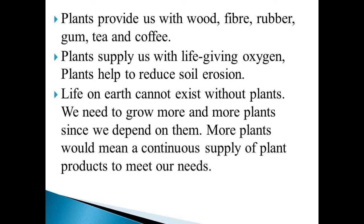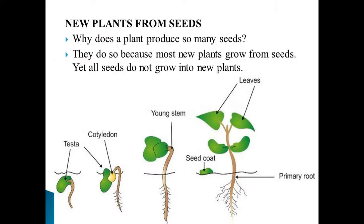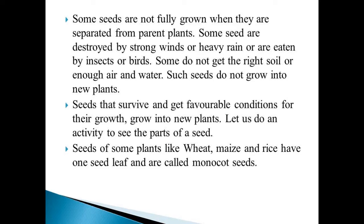New plants from seeds. Why does a plant produce so many seeds? They do so because most new plants grow from seeds, yet not all seeds grow into new plants. Some seeds are not fully grown when they are separated from the parent plant. Some seeds are destroyed by strong winds, heavy rain, or are eaten by insects or birds.